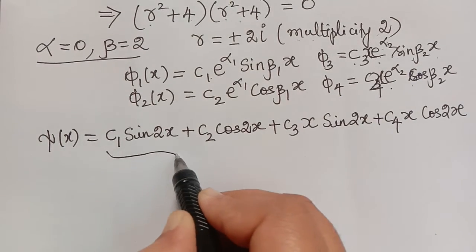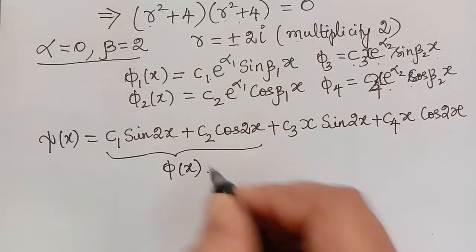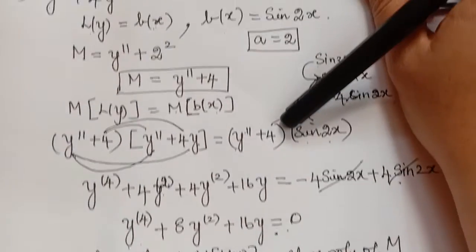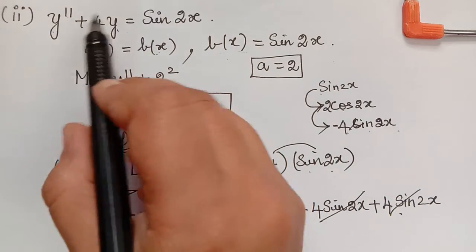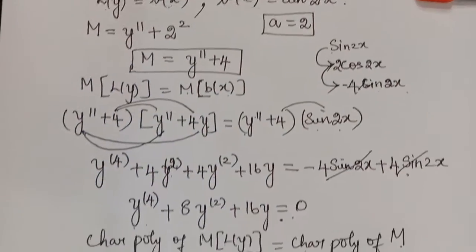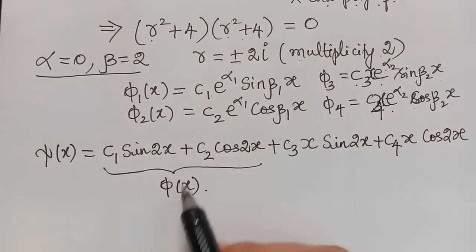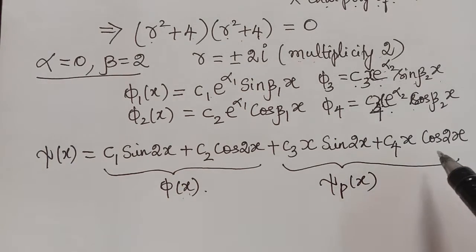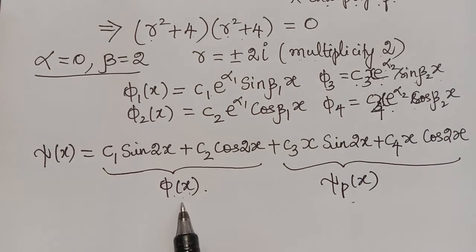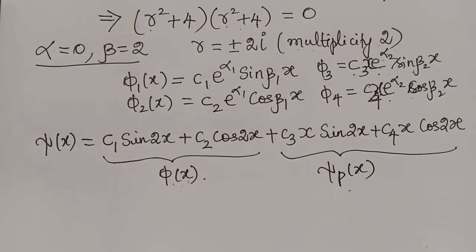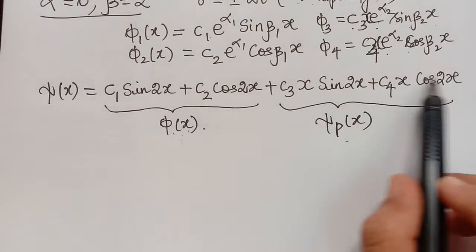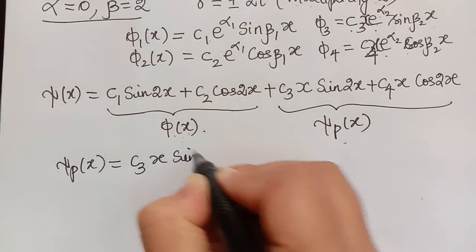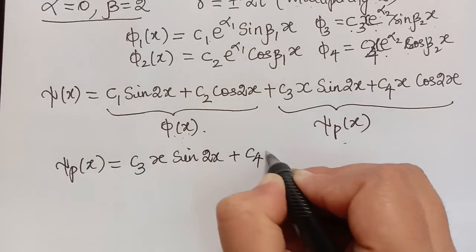From the general solution, we observe that c₁sin2x + c₂cos2x is the solution φ(x) of the homogeneous equation L(y) = 0, since r² + 4 = 0 gives roots ±2i. Therefore the particular solution ξp(x) must be c₃x·sin2x + c₄x·cos2x. We need to find c₃ and c₄ by eliminating the arbitrary constants.